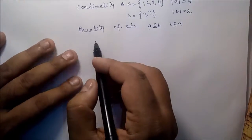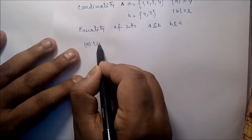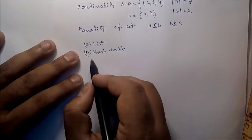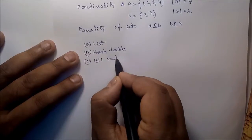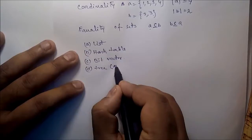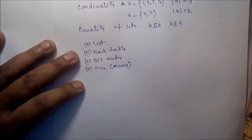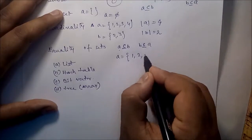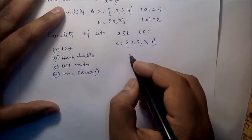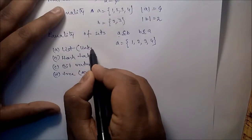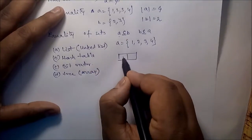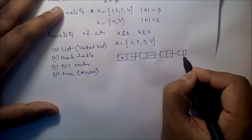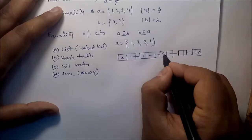Suppose there is one set: {1, 2, 3, 4}. If we use a linked list, we can store the elements as nodes: 1 → 2 → 3 → 4. This is how set A can be represented using a linked list.